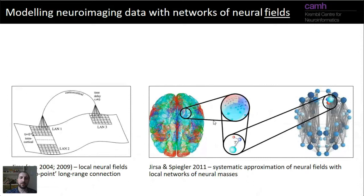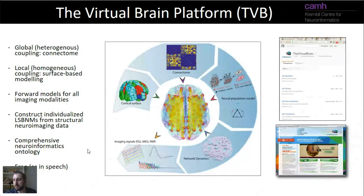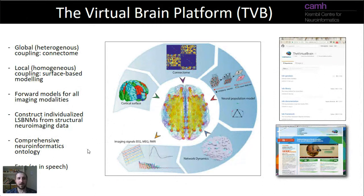One concrete project pushing the envelope in implementing these types of models is The Virtual Brain, which I've had the pleasure of being involved with over the years. The Virtual Brain is a Python library that you can install and run simulations with — and that's exactly what we'll be doing in our tutorial shortly. It pulls together the different components we've discussed: a connectome, a modular and highly usable collection of neural population models that can be easily configured for whole brain simulations.